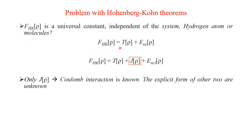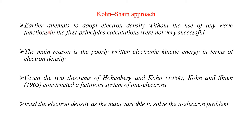The F_HK as a function of density can be written as the kinetic energy plus the electron-electron interaction energy, as seen in Lecture 4. F_HK can be written into two parts: the Coulombic interaction energy and the non-classical interaction. We know only the Coulomb interaction J(ρ); we don't know the explicit form of the other two terms. The earlier attempts to adopt the electron density without the use of any wave function in first-principles calculations were not very successful.